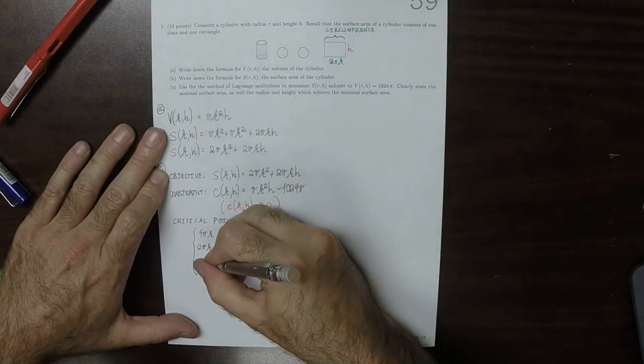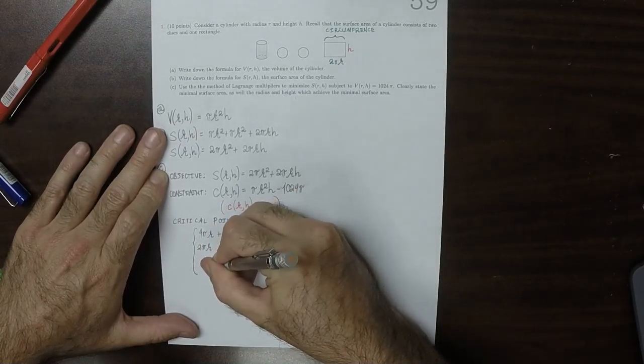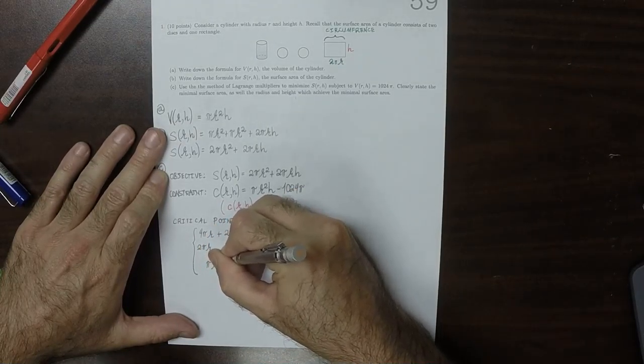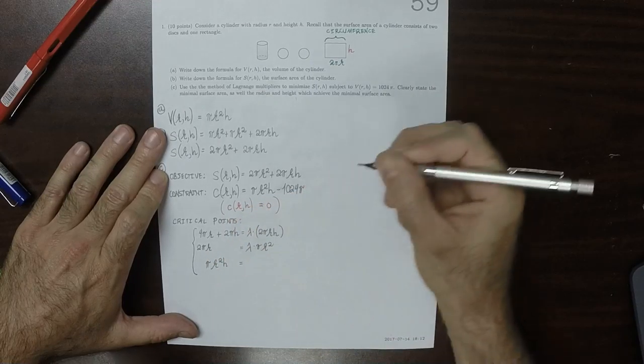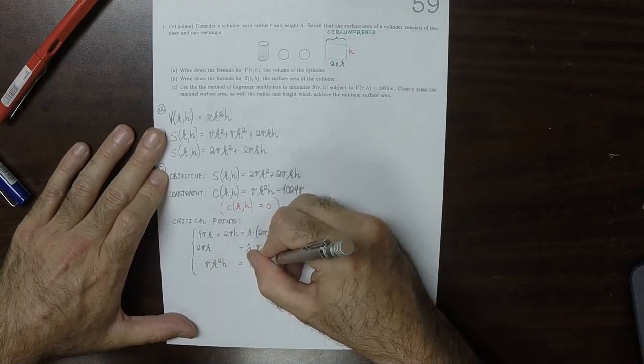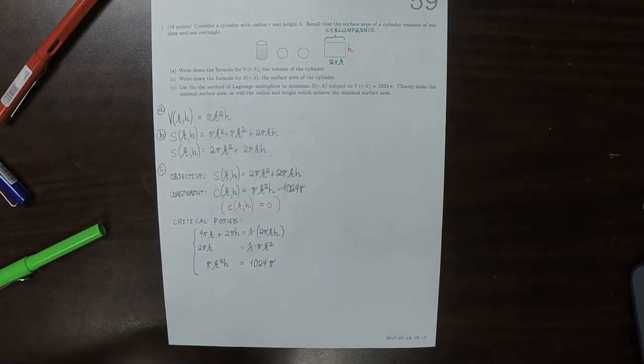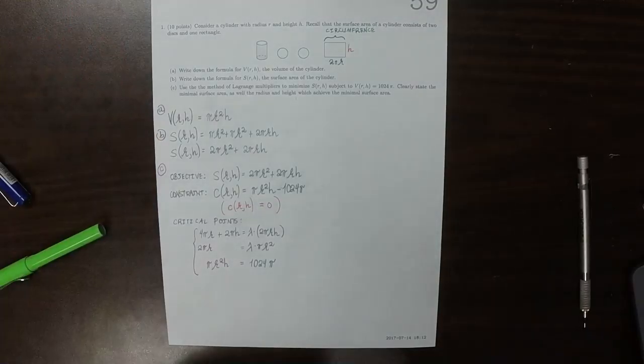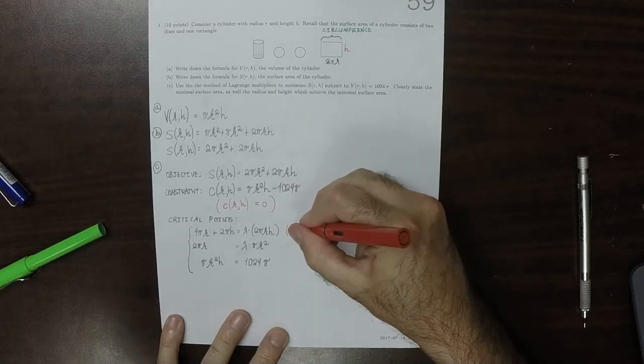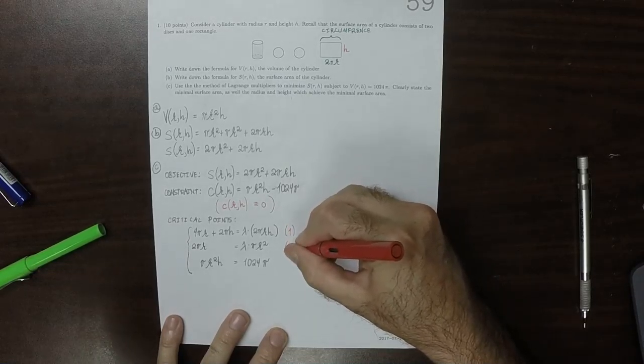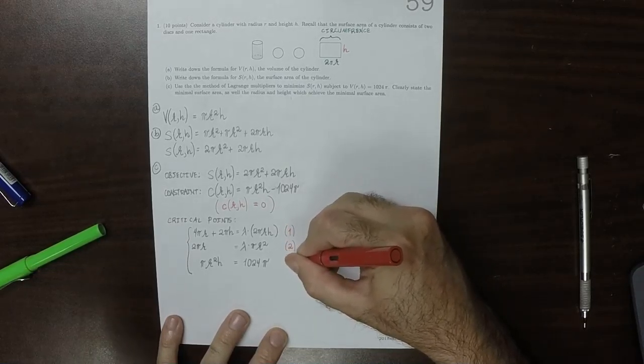Okay, and then the constraint is that pi r squared h, the volume, must be 1024 pi. Okay, well, let's number these 1, 2, 3.